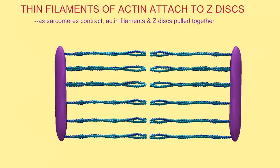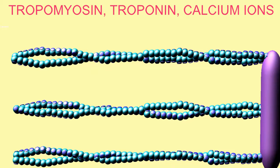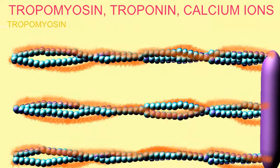...will continue until calcium is pumped back into the SR and troponin and tropomyosin once again block the active sites of actin so that myosin cannot bind.